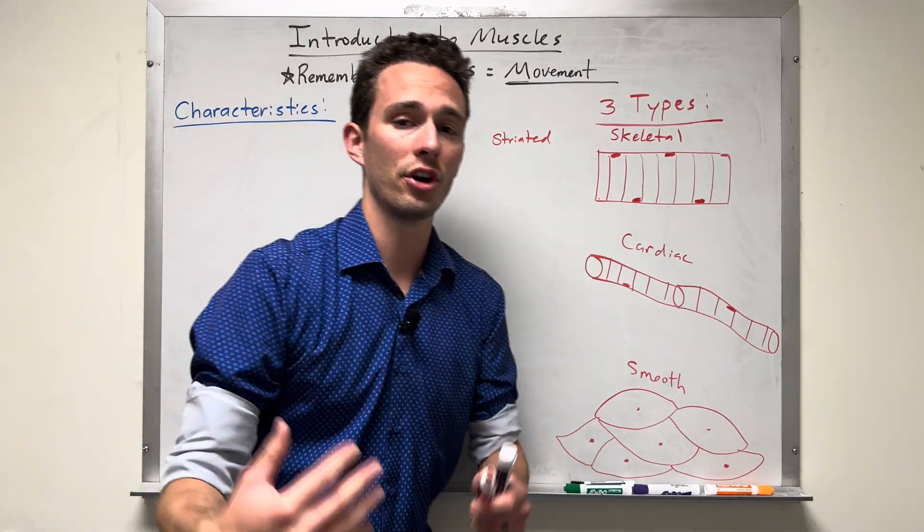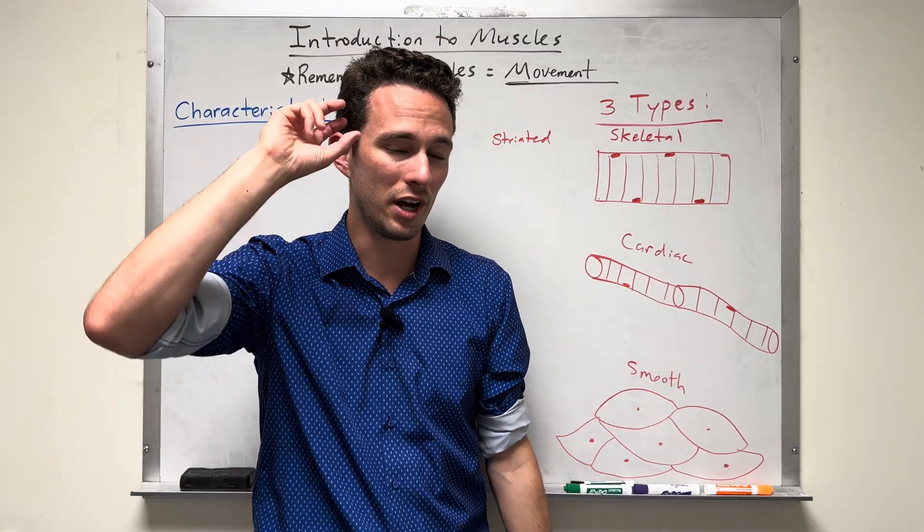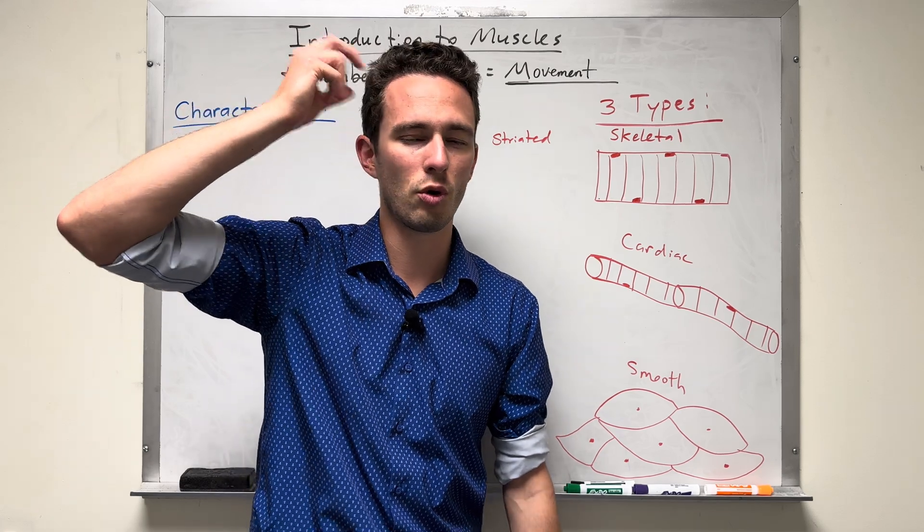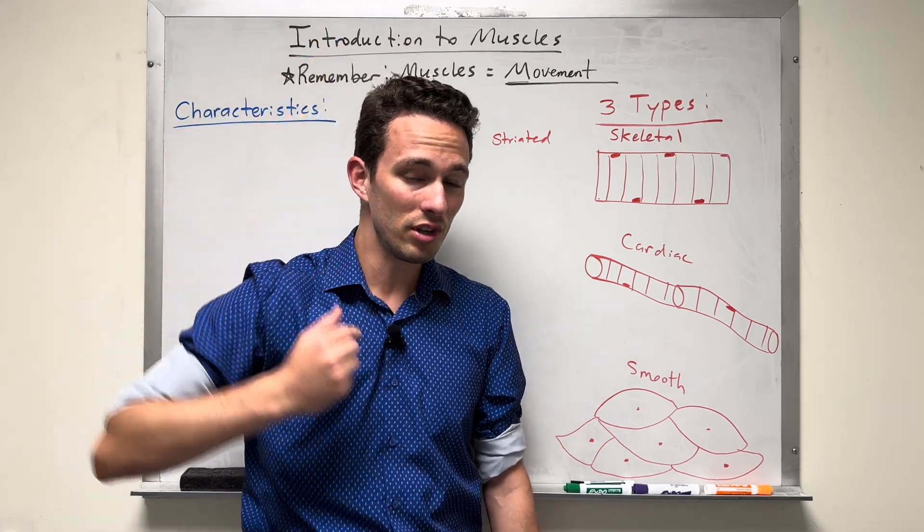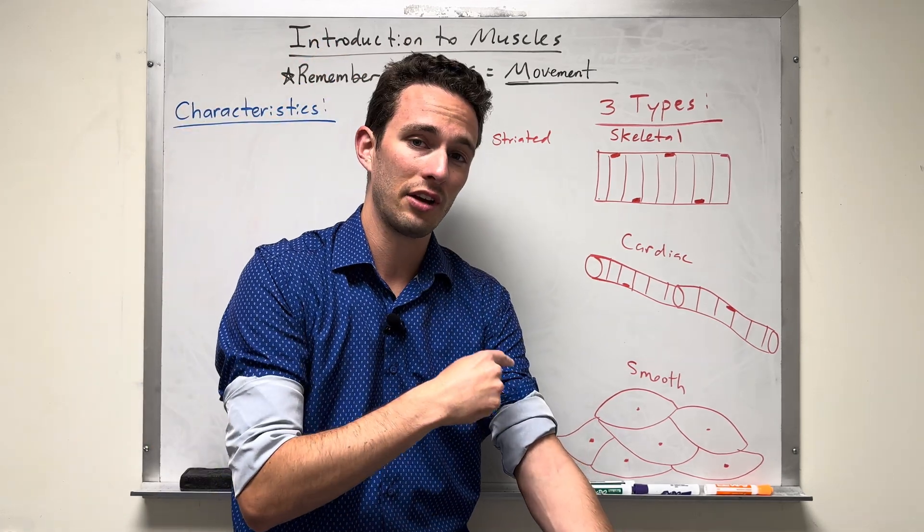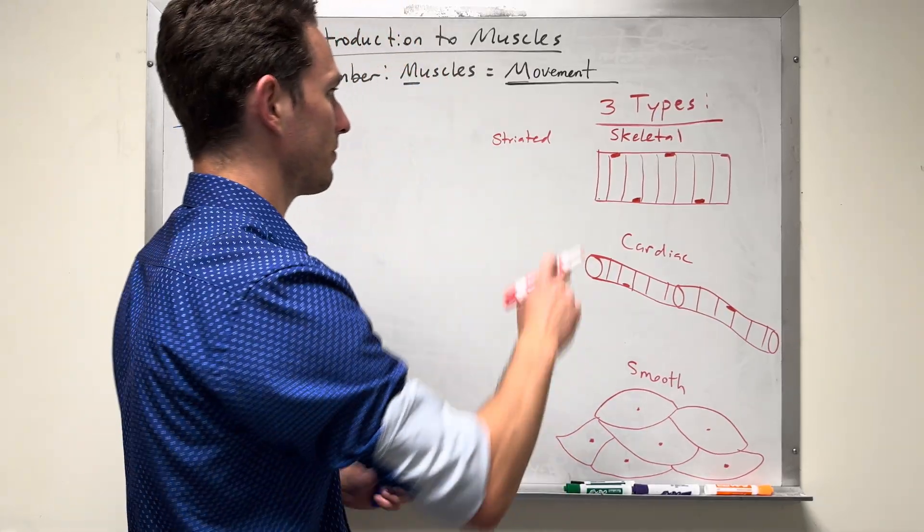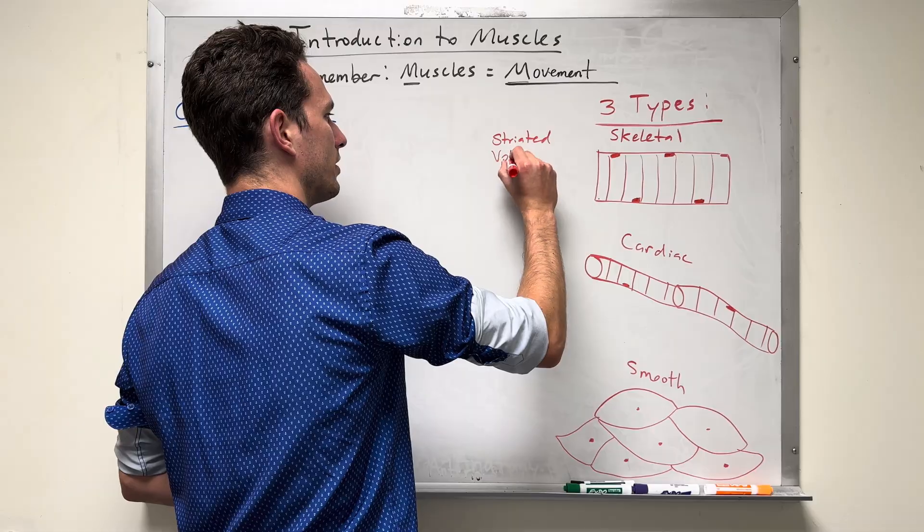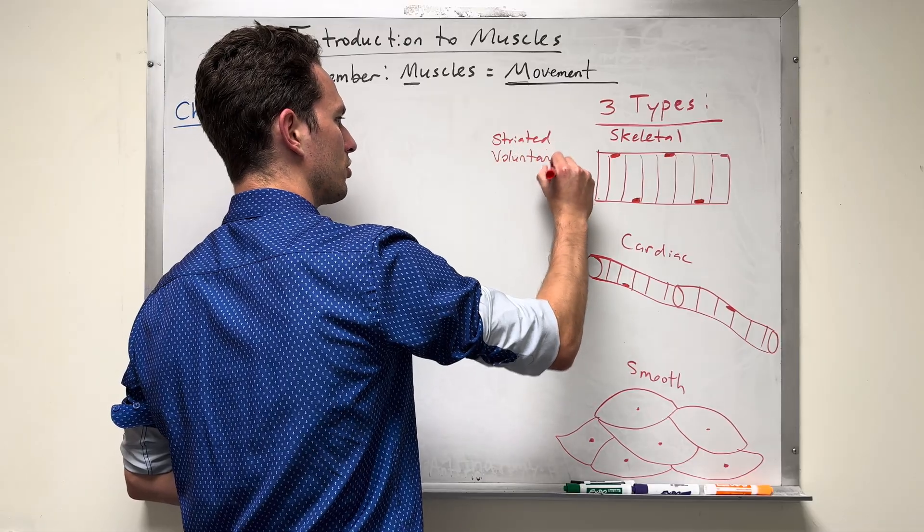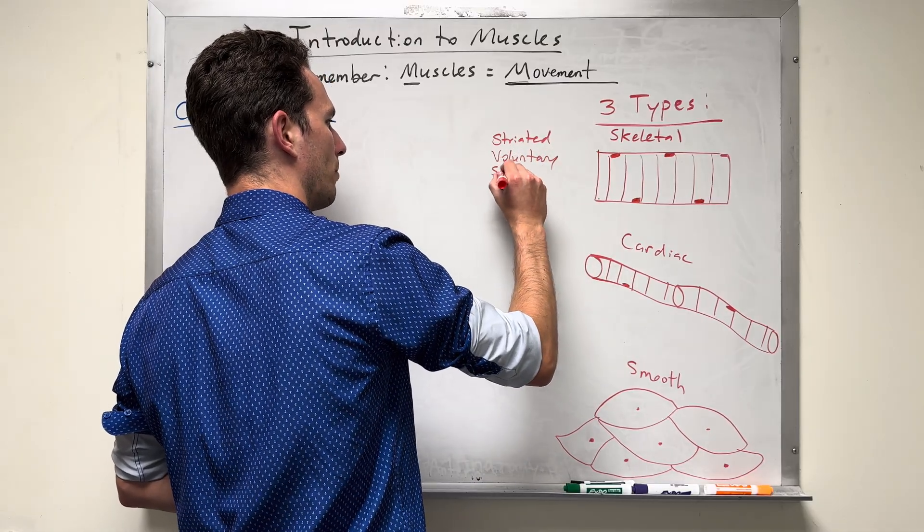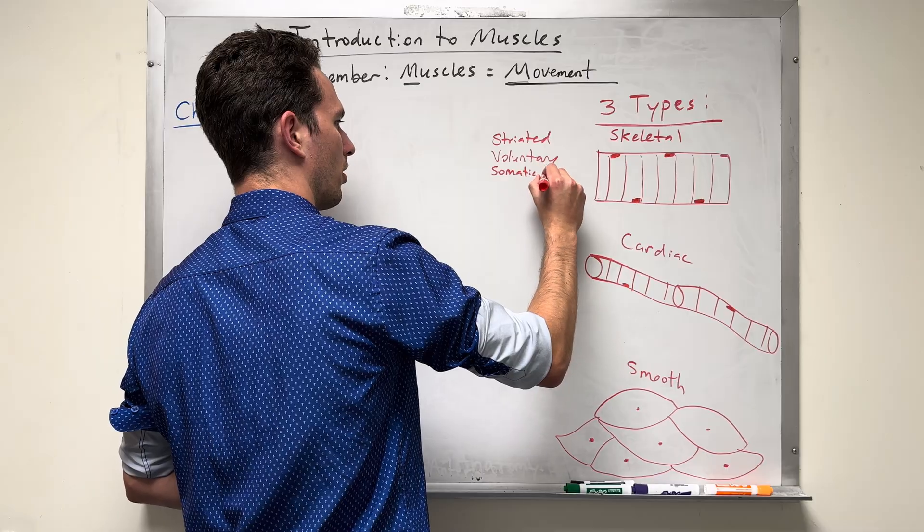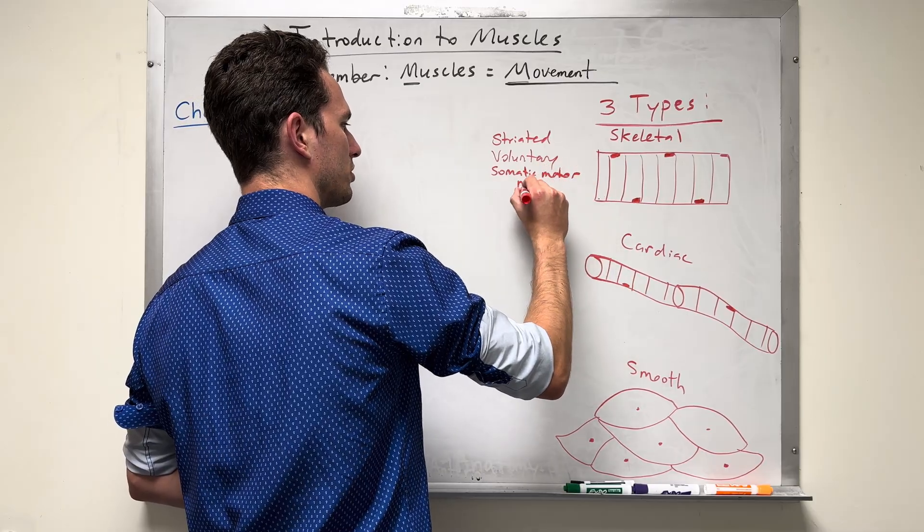We also will learn about in the brain that there's a specific part called the primary motor cortex that can directly communicate through nerves to our skeletal muscles, and we can do that consciously. So we say that skeletal muscles are voluntary muscles, and they're controlled by something called somatic motor neurons.